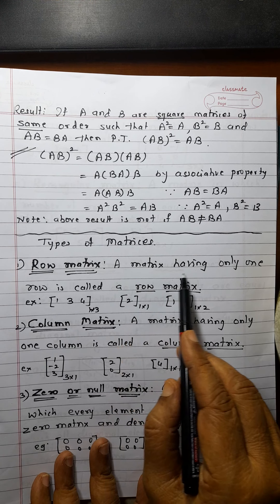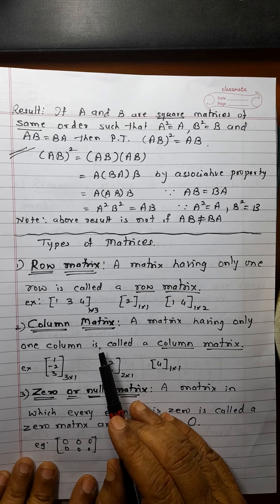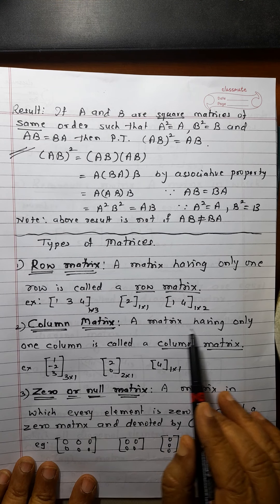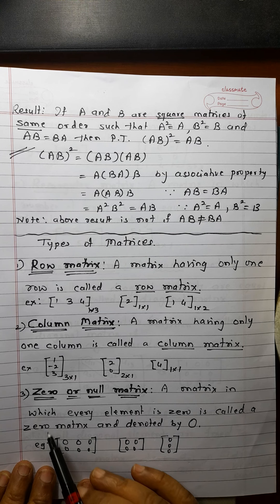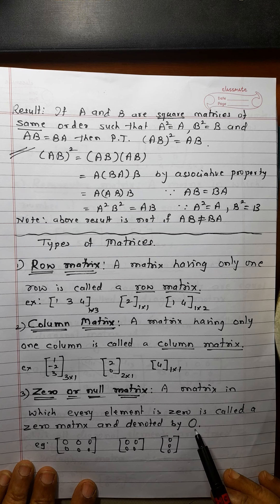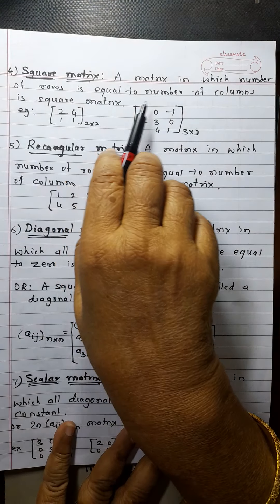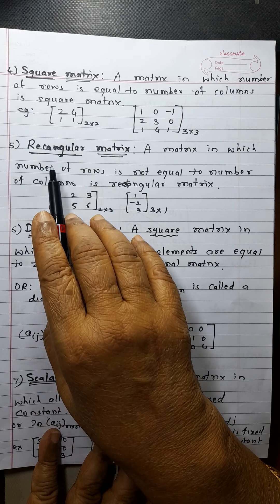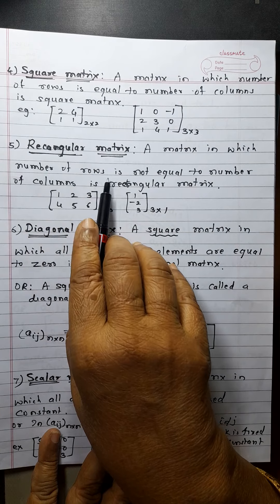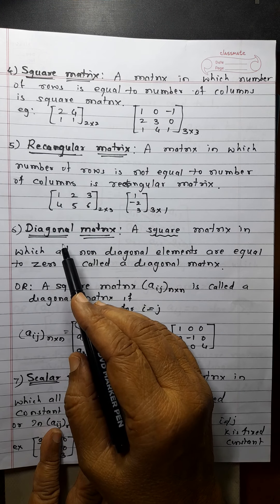Now, types of matrices. A matrix having only one row is called a row matrix — orders 1×3, 1×1, 1×2. A matrix having only one column is called a column matrix. A matrix in which every element is 0 is called a zero or null matrix, denoted by O — whatever the order, if each element is 0 it is a zero matrix. A square matrix has number of rows equal to number of columns, e.g., 2×2, 3×3. A rectangular matrix has number of rows not equal to number of columns, e.g., 2×3, 3×1.